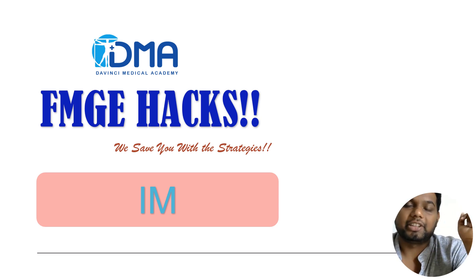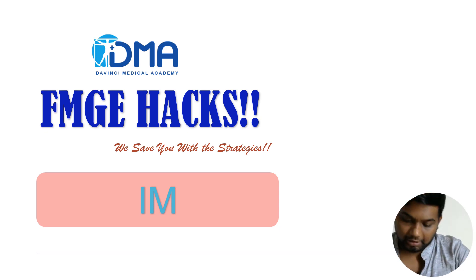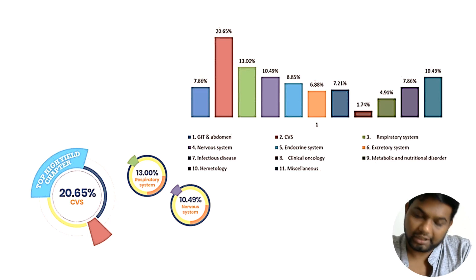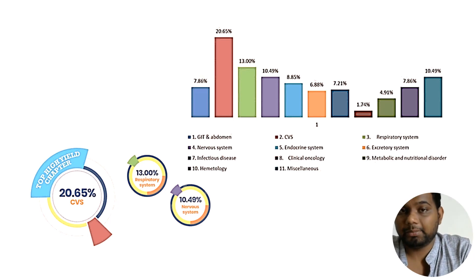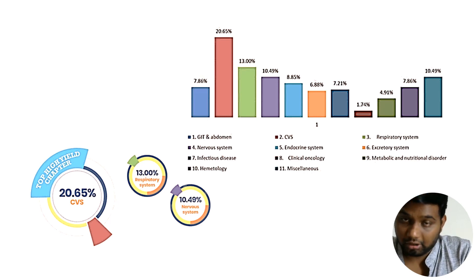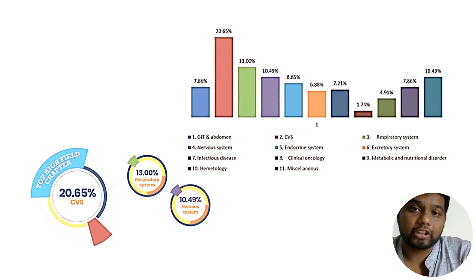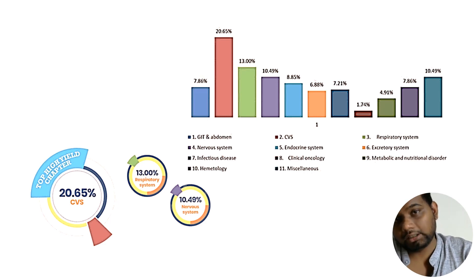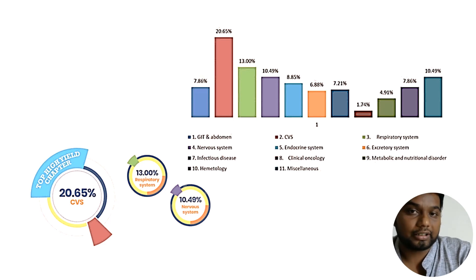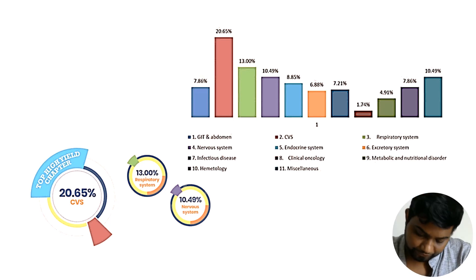Hello everybody, this is a DMA's FMG hack session and today we are going to talk about internal medicine. Speaking about internal medicine, we have a variety of high-yield areas. The main areas to be covered are neurology, cardiology, and pulmonology — these three areas where you should master your medicine, where you may expect to see at least 40 to 45 percent of the questions. The rest covers the remaining 55%, while the highest area of target is cardiovascular, respiratory, and nervous system.